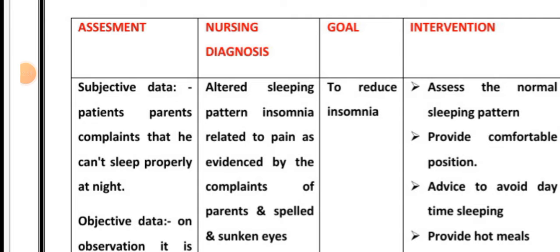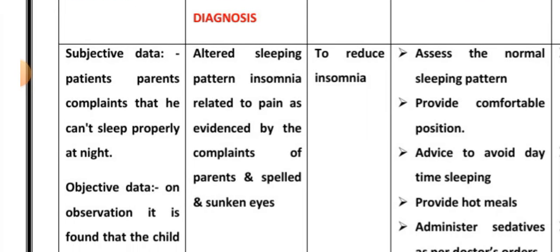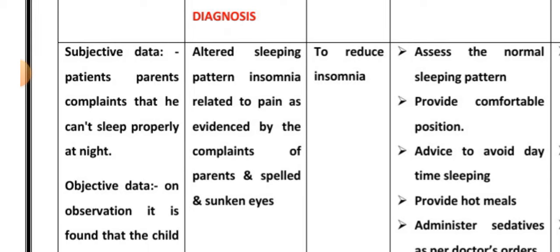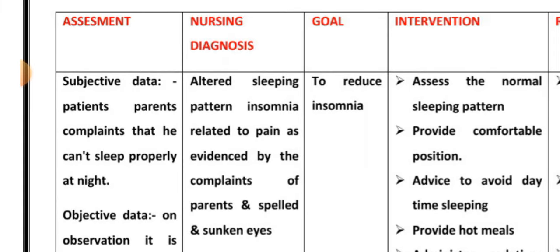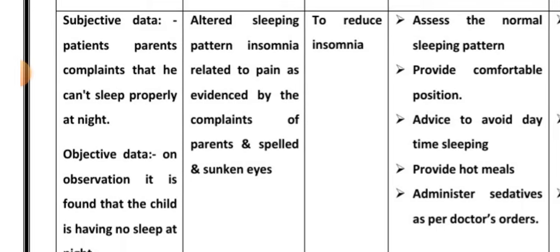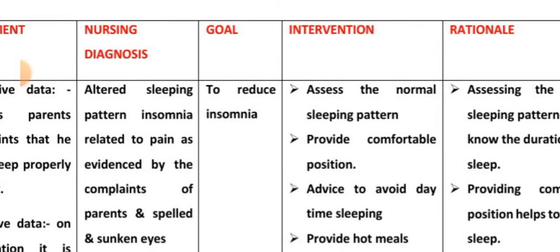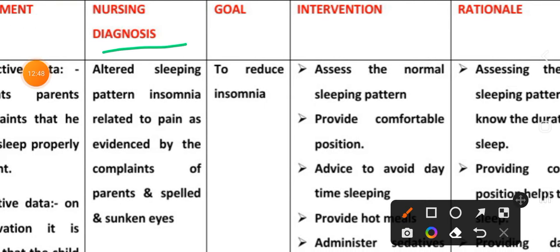Assessment — subjective data: patient's parents complain that the child cannot sleep properly at night. Objective data: on observation, it is found that the child is having no sleep at night. Nursing diagnosis: altered sleeping pattern — insomnia related to pain.